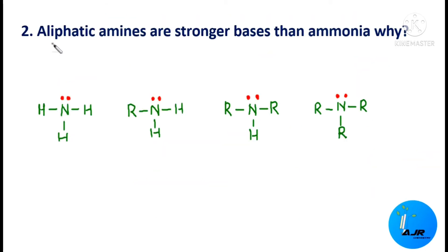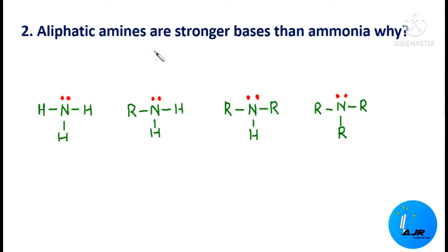The next question: why are aliphatic amines stronger bases than ammonia? This can be explained in terms of the electron-releasing inductive effect, that is the plus I effect. This plus I effect is seen in alkyl groups — alkyl groups are electron-releasing groups.